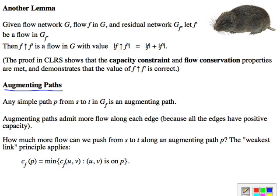And scrolling down a bit here, we can now define augmenting paths, noting that any simple path that we find in the residual network from S to T is an augmenting path, which is a path that adds flow to the original flow. They are always going to add more flow along each edge because all the edges in the G of F have positive capacity. None of them have zero capacity by the definition. And so the question is, how much flow do we add? Well, you just take the minimum along the path. It's the weakest link principle. Find the edge UV that has the minimum C of F value, and that's the capacity of the whole path.